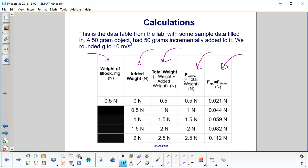So we start with the 50 gram object, so the weight of that is 0.5 newtons. Then we will be adding 50 grams incrementally, or 0.5 newtons. We rounded g to 10 meters per second squared. 9.8 of course is a lot more accurate and precise, but the way this experiment goes, this 10 isn't going to cost us much. So go ahead and use it.